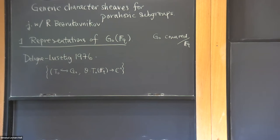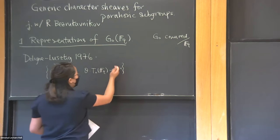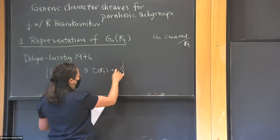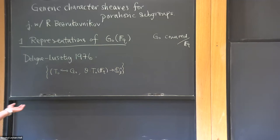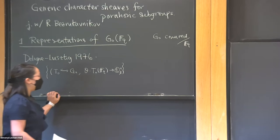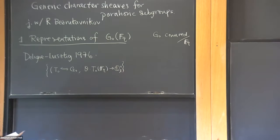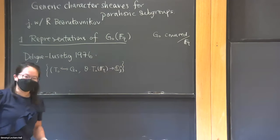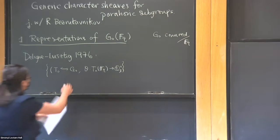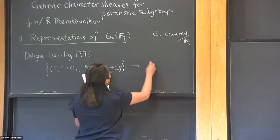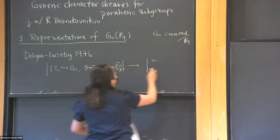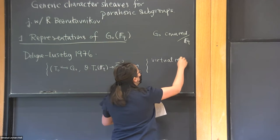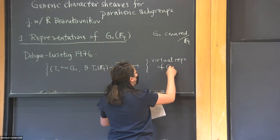Throughout, my representations will basically be over ℂ — there will be a lot of ℓ-adic cohomology, so maybe it's better to put Q̄_ℓ here. I learned only yesterday during Alain's talk that I might be killed for talking about ℓ-adic methods, so please spare me. Or maybe I asked the organizers for protection since you invited me! So there's a map that goes to virtual representations of G_0(F_q).